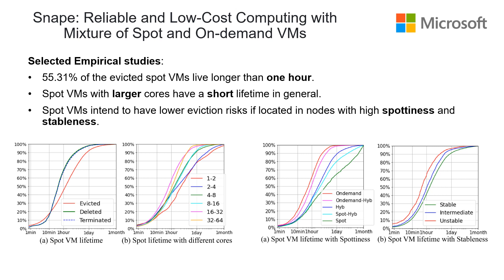Here we show some selected empirical studies to demonstrate the characteristics of Spot VMs in Azure. Around 55% of the active Spot VMs live longer than one hour. Spot VMs with larger cores have a shorter lifetime in general, which matches our expectation. It is because when on-demand VMs need capacity back, nodes with larger Spot VMs are more likely to be tightly packed with less remaining empty capacity, and this will result in evictions.